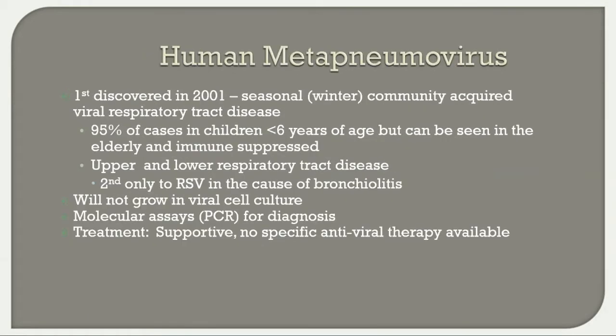Human metapneumovirus was first discovered in 2001 with increased use of molecular techniques. It is a seasonal winter virus occurring alongside influenza season, mostly in children under 6 years, but also seen in the elderly and immune-suppressed. It causes both upper and lower respiratory tract disease and is capable of causing serious bronchiolitis. It does not grow in viral cell culture, so molecular assays are required for diagnosis. Treatment is mostly supportive with no specific antiviral therapy and no vaccine.